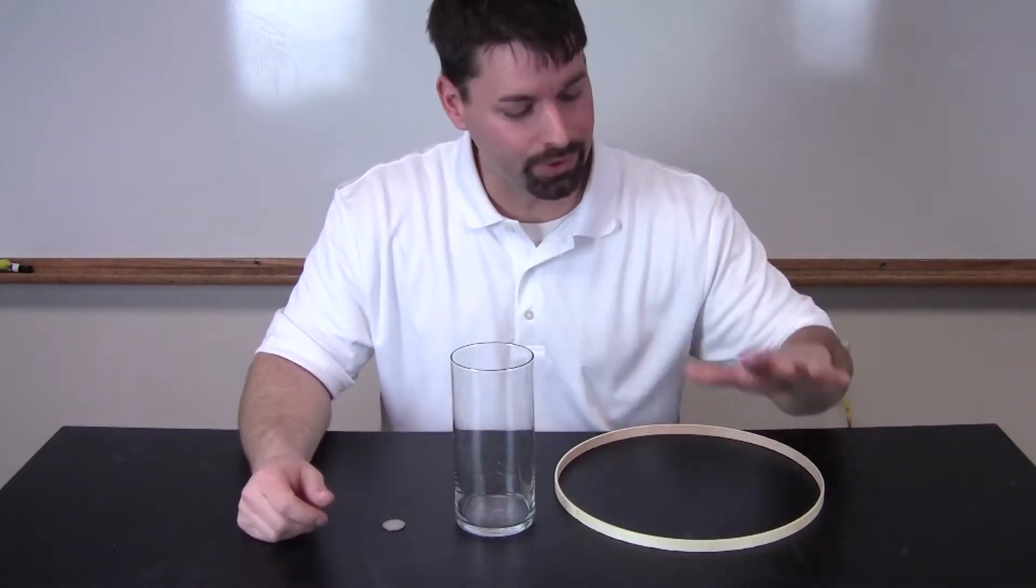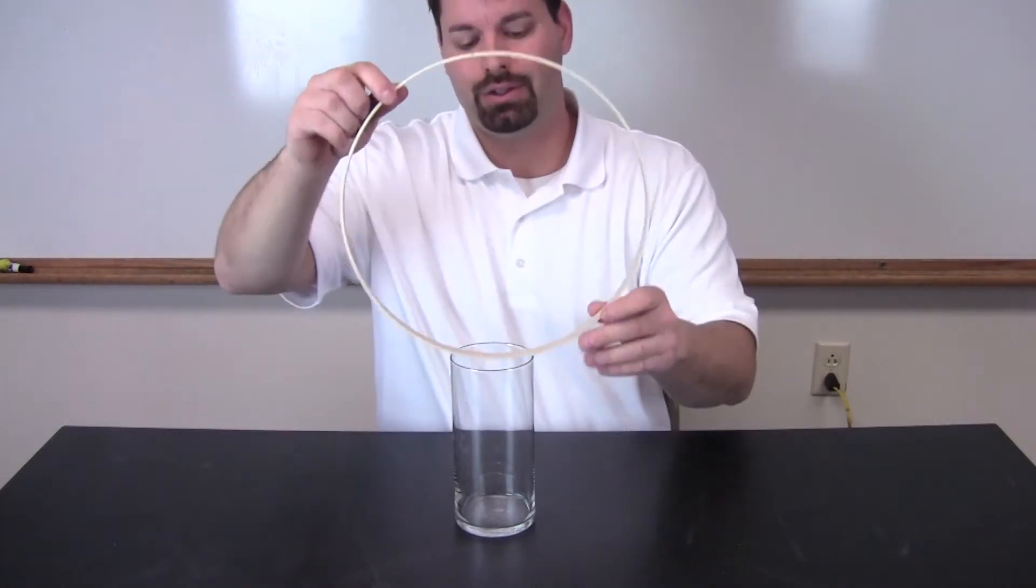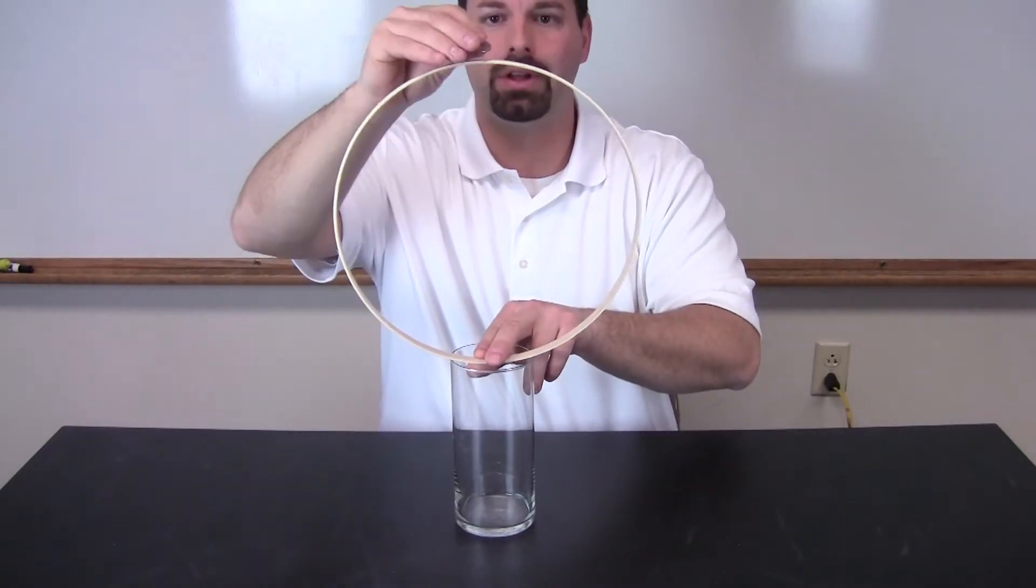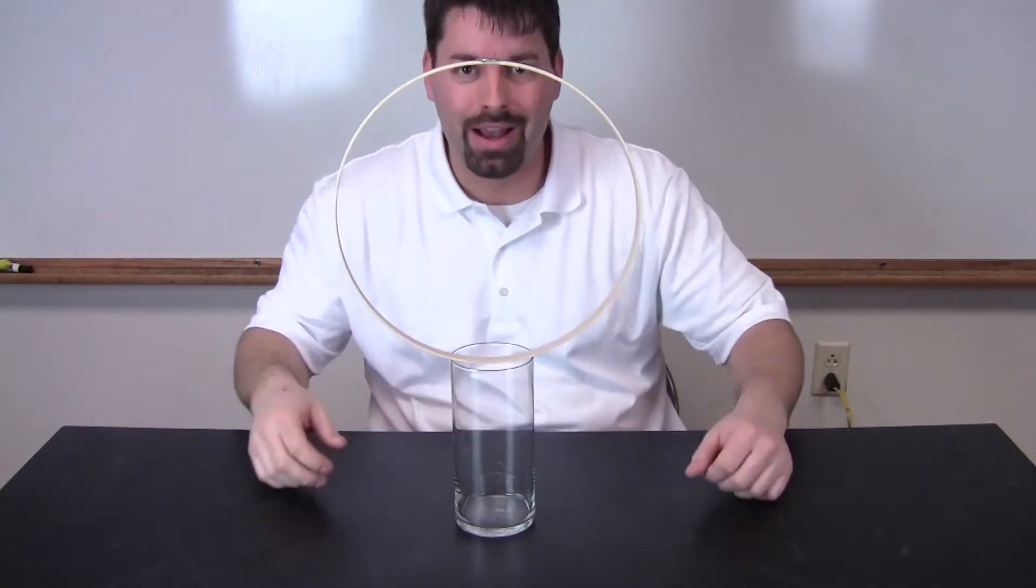I have pretty simple materials. I have a wooden hoop, a glass and a coin. And now I need to balance them. So I'm going to balance the wooden hoop on the glass and balance the coin on top of the hoop. It's pretty much in line.